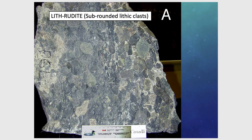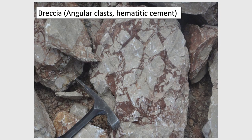Another lithic rudite example: stratification in clast orientation confirms a flow process; it is clast-supported with more than 40–50% gravel. The angular breccia specimen has been mentioned already — likely a karst, carbonate-rich, dolomitic breccia with very angular, same-composition clasts confirming little transport.